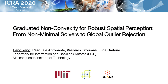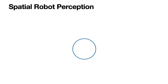Hello everyone, my name is Han. I'm glad to virtually present our paper, Graduating Nonconvexity for Robust Spatial Perception: From Non-Minimal Solvers to Global Outlier Rejection. This is joint work with Pasquale, Vasilis, and Luca from the MIT SPARC Lab.